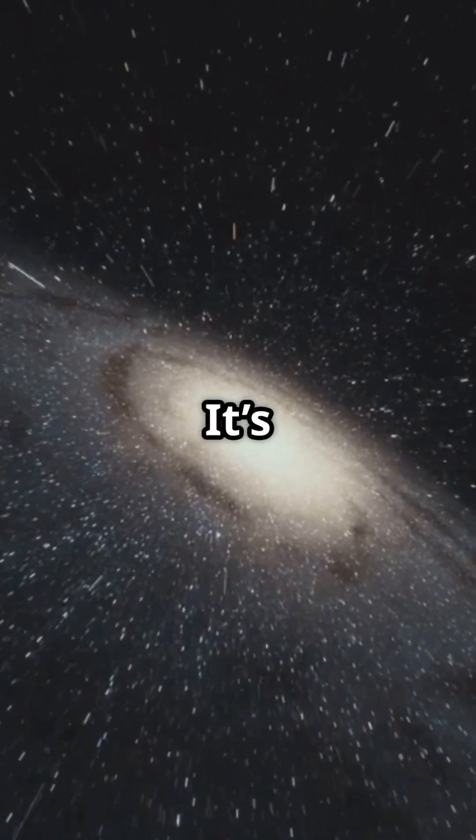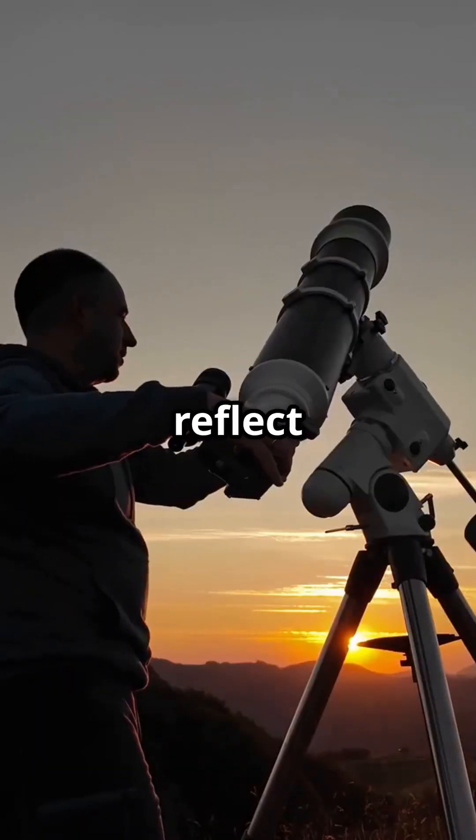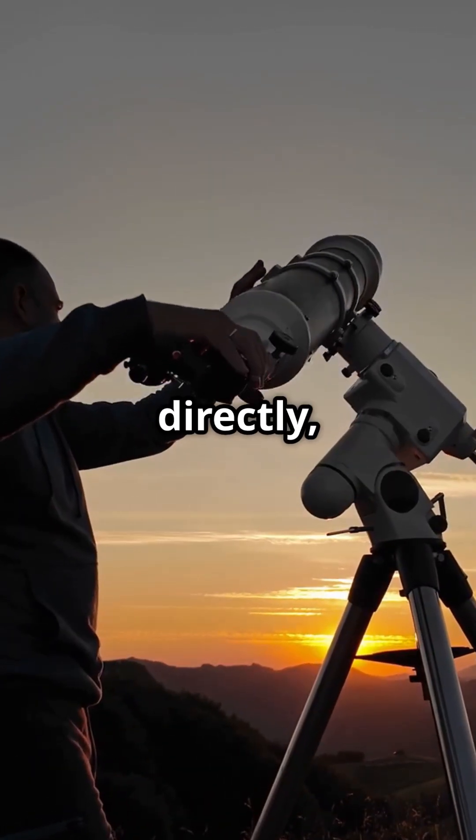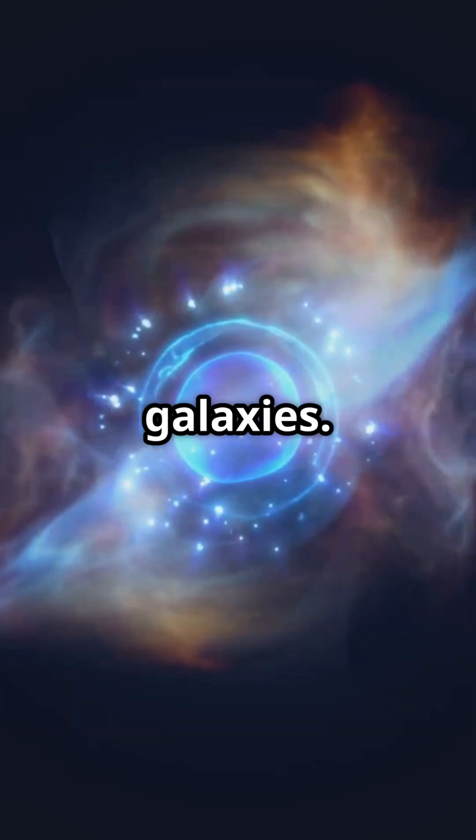What is dark matter? It's a form of invisible matter that does not emit, absorb, or reflect light. We can't see it directly, but we know it's there because it affects the motion of galaxies.